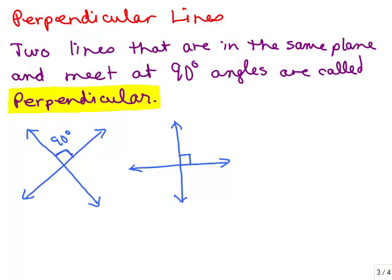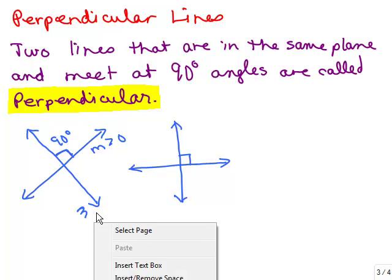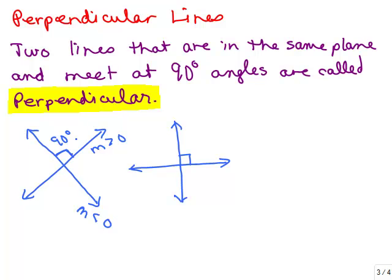Let's talk about perpendicular lines. Two lines that are in the same plane and meet at 90 degree angles are called perpendicular. Here is an example of two perpendicular lines that meet at a 90 degree angle. Notice one line has a slope that is positive and the other line has a slope that's negative. And that should make sense since they meet at 90 degree angles. It's not always true that one will always be positive and one negative, but usually that's the case.